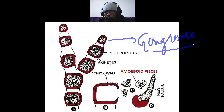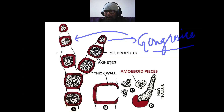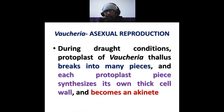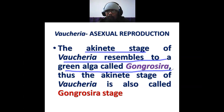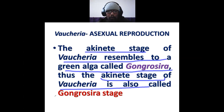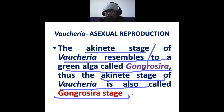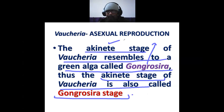Gongrosia morphologically resembles the Vaucheria thallus when it is in the akinete stage. Therefore, when Vaucheria thallus forms akinetes, we also call it the Gongrosia stage. The akinete stage of Vaucheria resembles the green alga Gongrosia, and thus the akinete stage of Vaucheria is also called the Gongrosia stage.